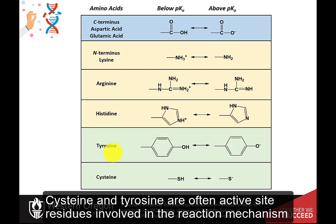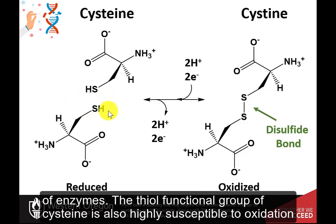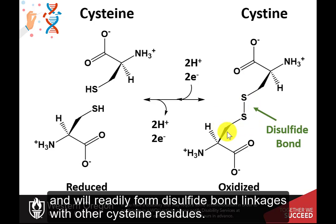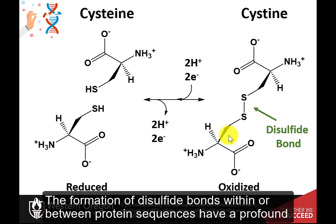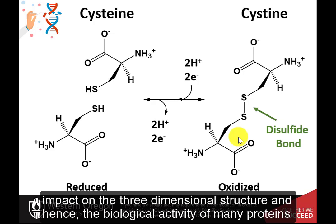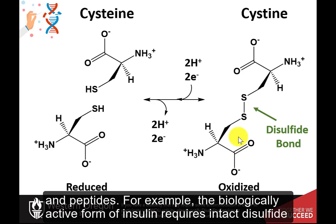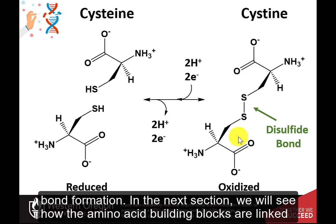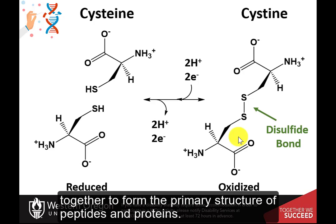Cysteine and tyrosine are often active site residues involved in the reaction mechanism of enzymes. The thiol functional group of cysteine is also highly susceptible to oxidation and will readily form disulfide bond linkages with other cysteine residues. The formation of disulfide bonds within or between protein sequences have a profound impact on the three-dimensional structure and hence the biological activity of many proteins and peptides. For example, the biologically active form of insulin requires intact disulfide bond formation. In the next section, we will see how the amino acid building blocks are linked together to form the primary structure of peptides and proteins.